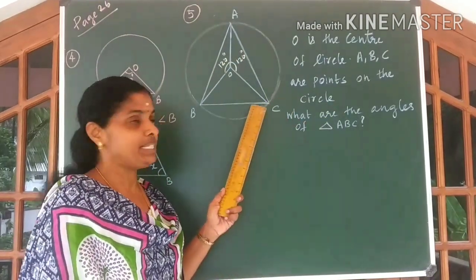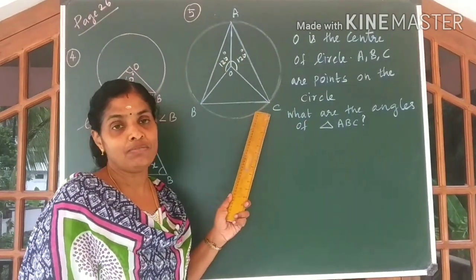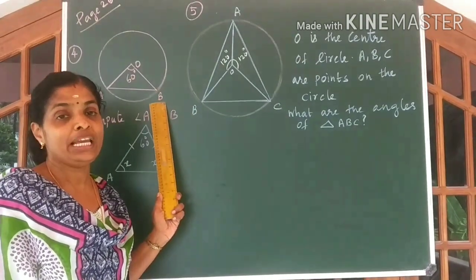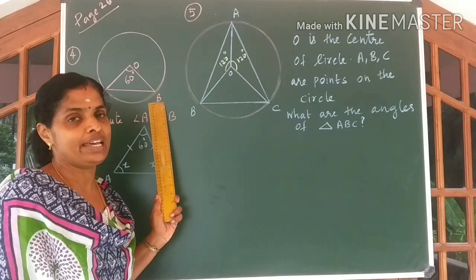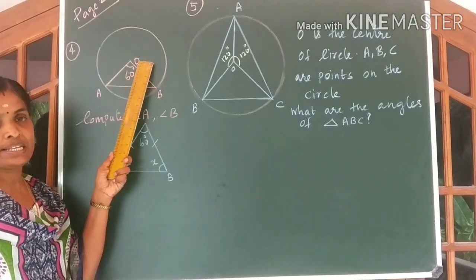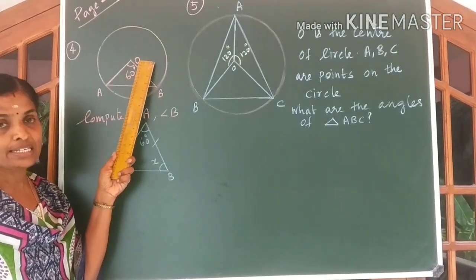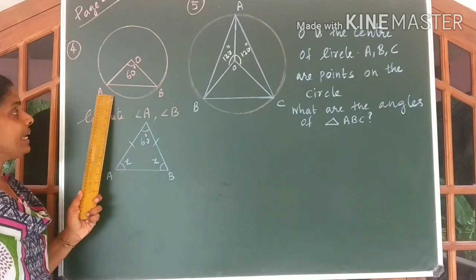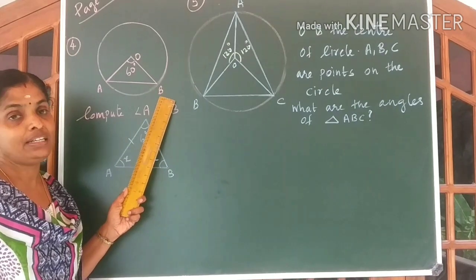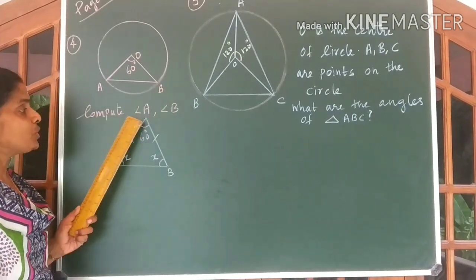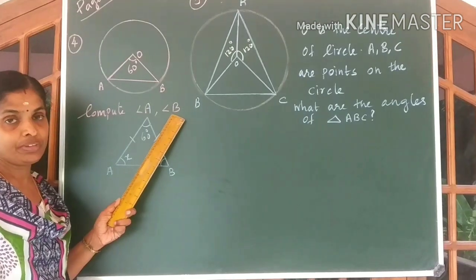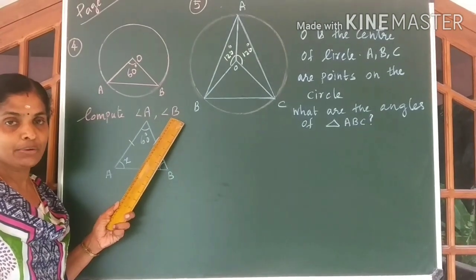But before answering question number 5, please look at question number 4. Only then it will be more clear to you. Look at the question children. O is the center of the circle. A and B are any two points on the circle. The question here is to compute angle A and angle B. Is the question clear?